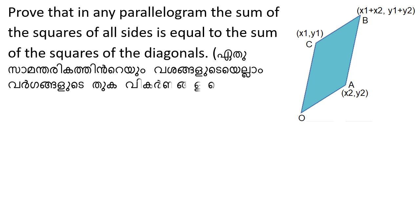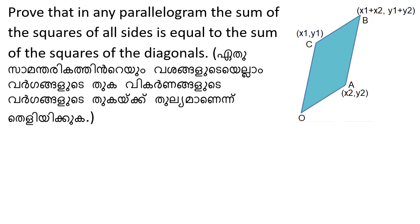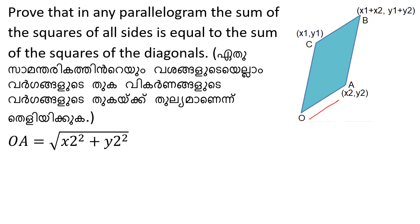True that in any parallelogram the sum of the squares of all sides is equal to the sum of the squares of the diagonals. This is the parallelogram where the squares of all sides equal the squares of all sides, because the same angle is where the squares are equal. So this is another side and we do something with OA similar to my original A.